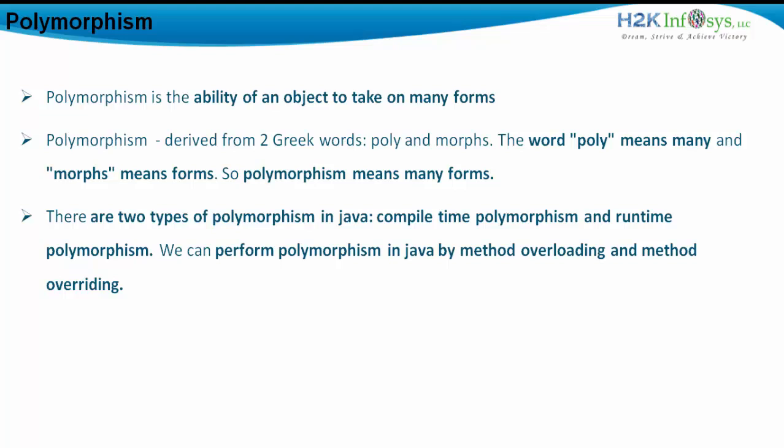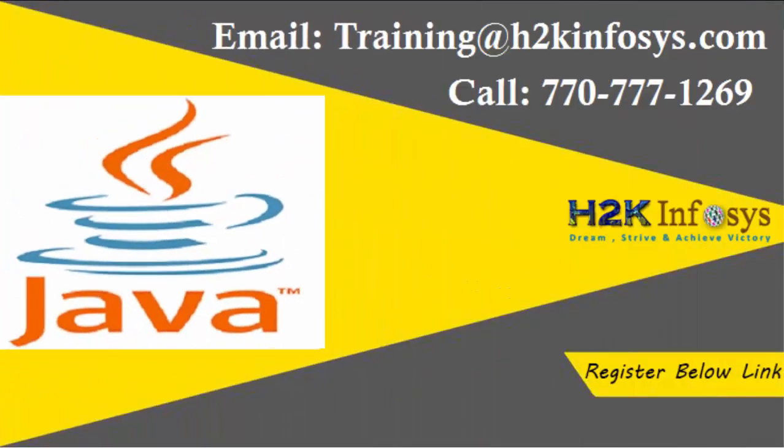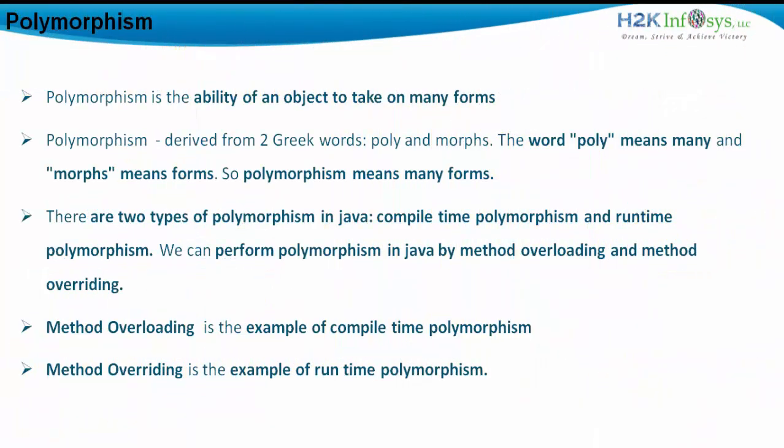At runtime, we will see the effect of polymorphism in the results shown in the Eclipse console. We already have examples of method overloading and constructor overloading, so we have covered compile time polymorphism. In method overloading, methods have the same name but different arguments. In constructor overloading, constructors have the same name but different argument types.